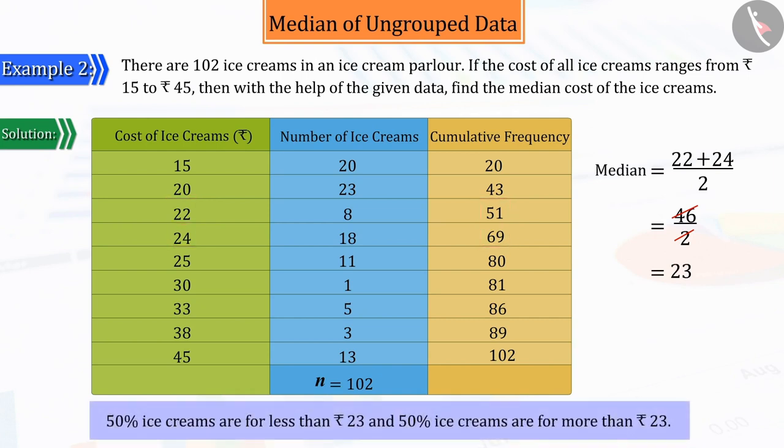Therefore, we can say that almost 50% ice creams are for less than 23 rupees and the remaining 50% ice creams are for more than 23 rupees.